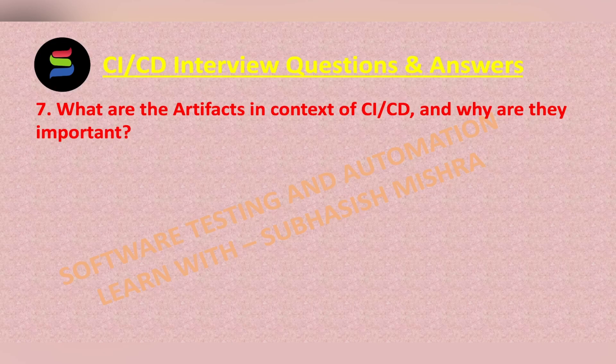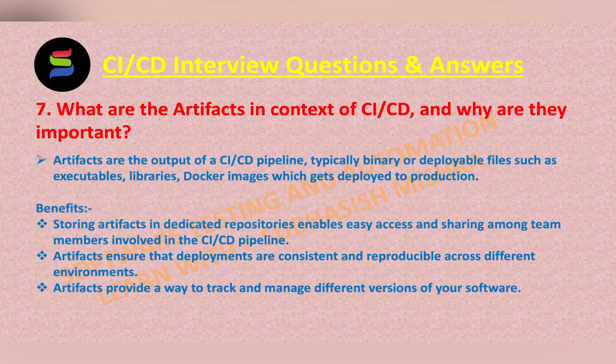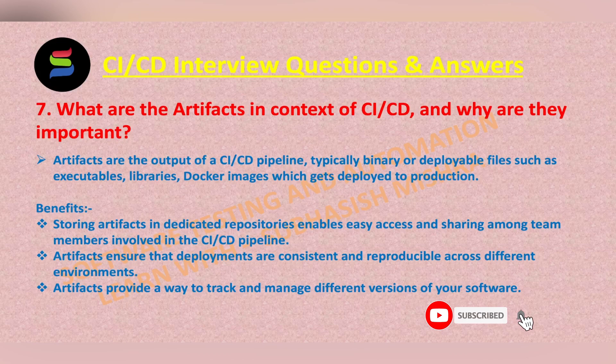What are the artifacts in context of CI-CD and why are they important? Artifacts are the output of a CI-CD pipeline, typically binary or deployable files such as executables, libraries, and Docker images which get deployed to production. Artifacts are important because they represent the end result of the deployment process that gets deployed to production.